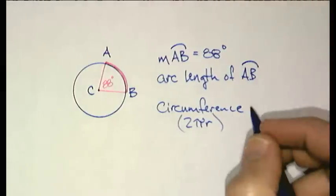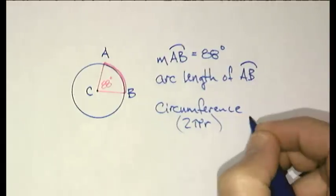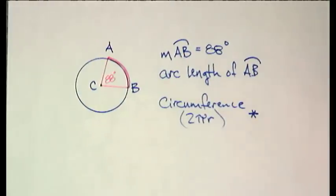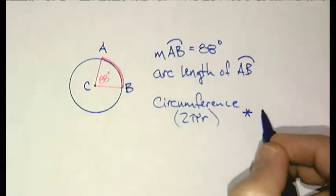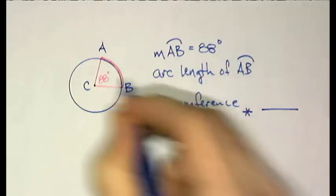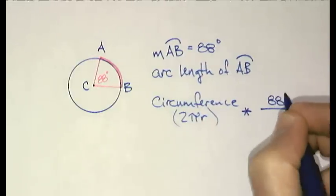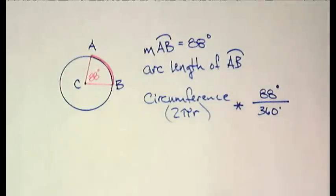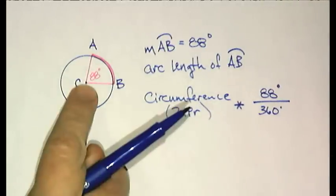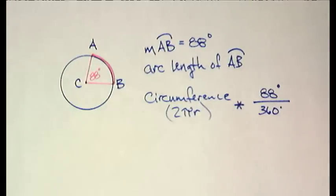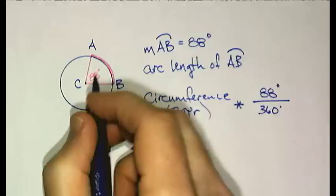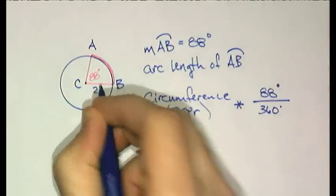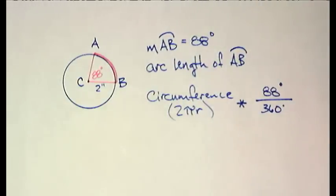And of course, I multiply the circumference times what fraction? I multiply it by 88 over 360. Now, I did one thing incorrect because you can't, unless I tell you the radius, there's no way that you're going to find what the circumference is. So let's say this is 2 inches. Now, we can find the arc length.